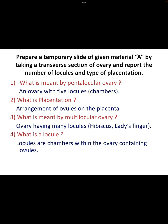The first question: prepare a temporary slide of a given material 'A' by taking a TSO of ovary. Here you have to take a TSO of ovary for the hibiscus flower. You have to report the number of locules and type of placentation. In the previous video I have shown you how to write and how much to write for this particular question 1A.